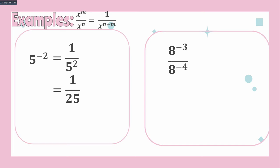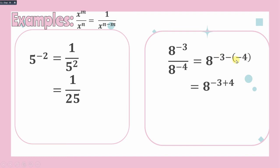Next example: we have both negative exponents — 8 raised to negative 3 divided by 8 raised to negative 4. We subtract the exponents: 8 raised to negative 3 minus negative 4. Following the rule for subtraction of integers, this becomes negative 3 plus 4. Simplifying, this becomes 8 raised to 1, or simply 8.